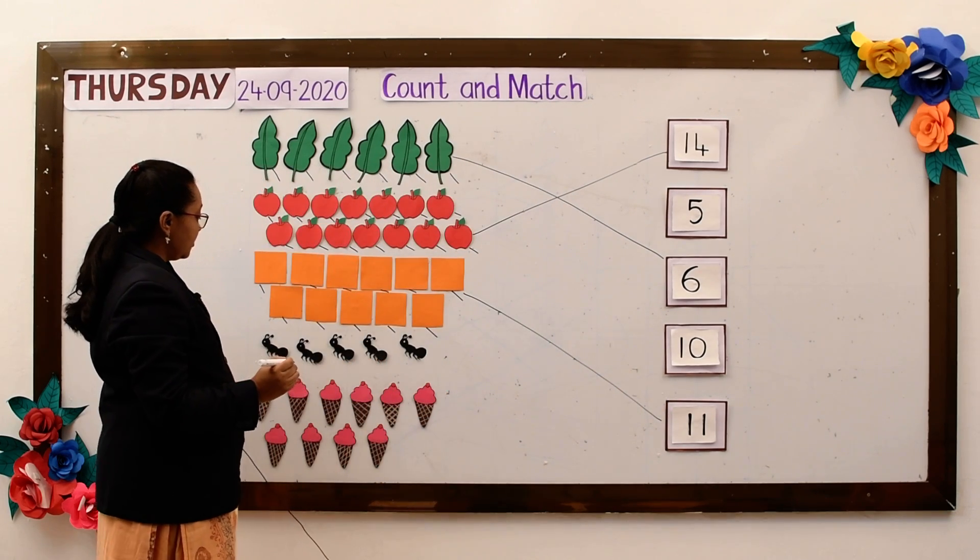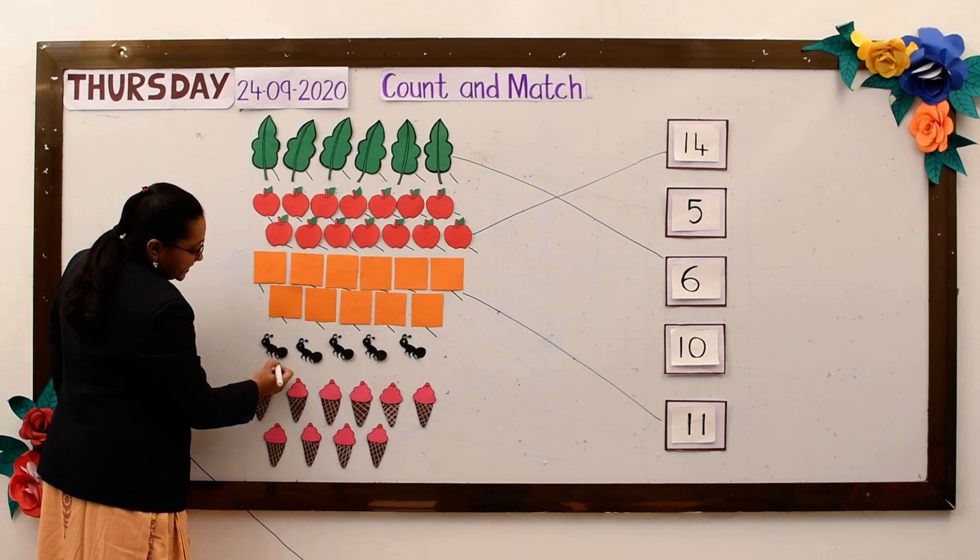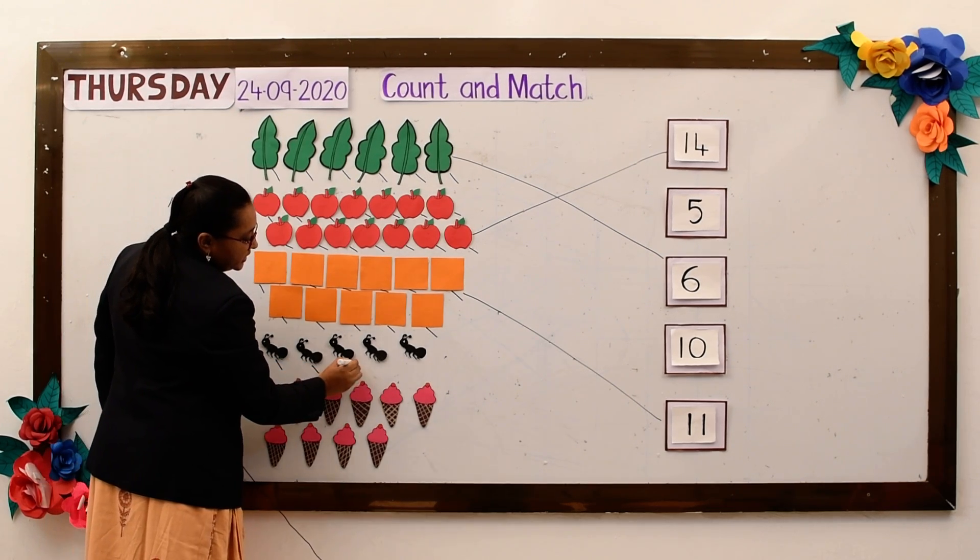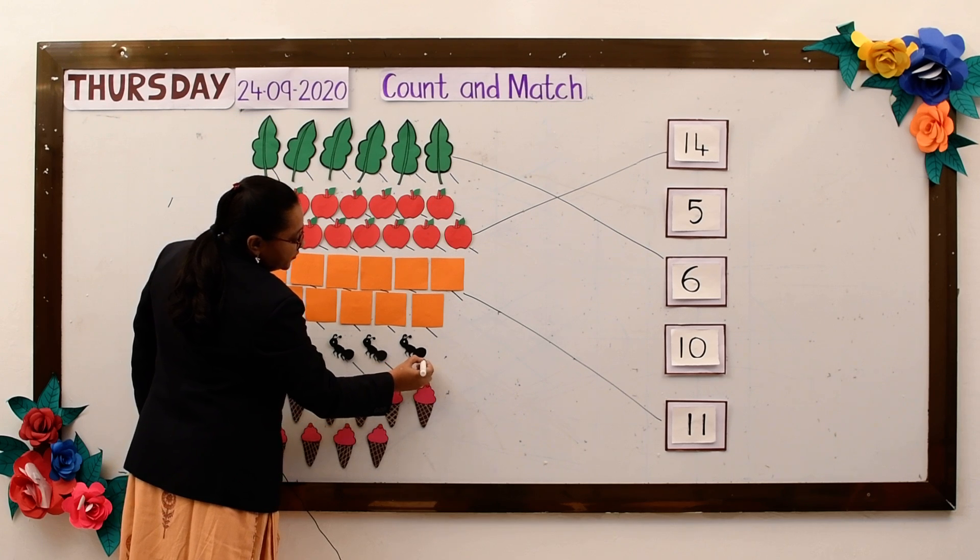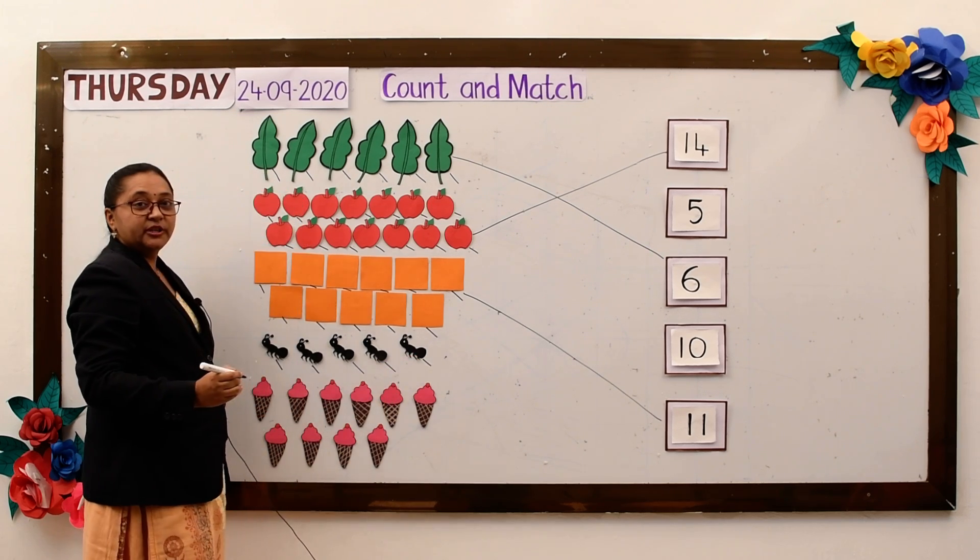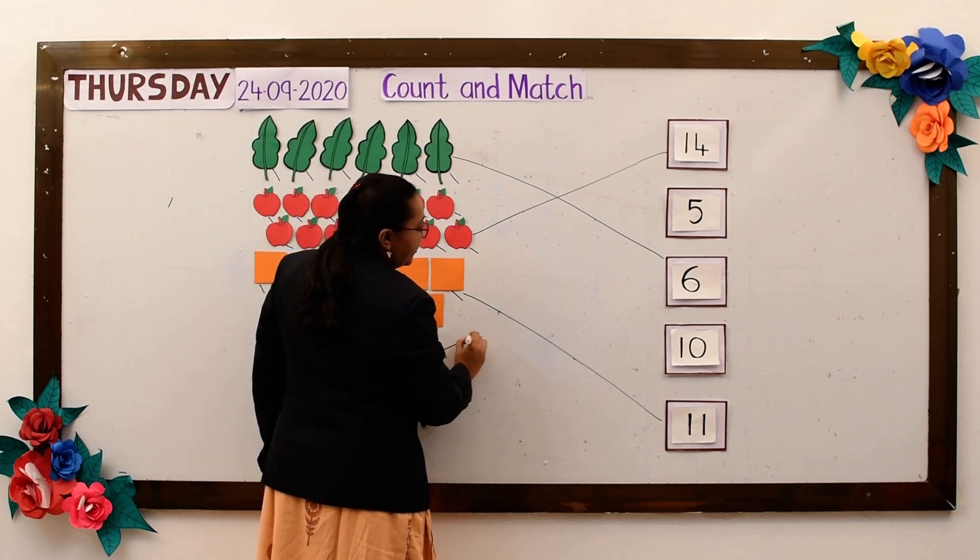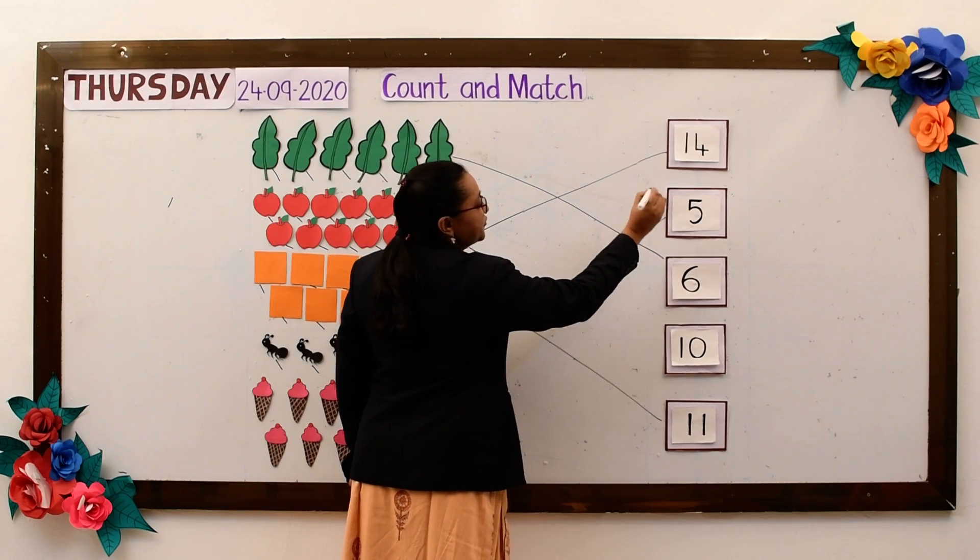Now next object. Let's count. 1, 2, 3, 4, 5. So how many objects? 5 objects. So I will match it to the number 5. So this is my number 5.